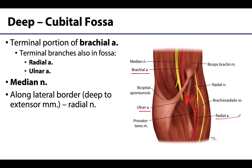These arteries and their branches supply the forearm and the hand. The median nerve is located either just deep to or just medial to the brachial artery, and it continues past the cubital fossa to innervate the majority of the anterior compartment of the forearm as well as portions of the hand.